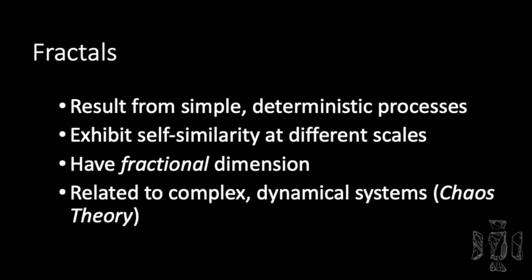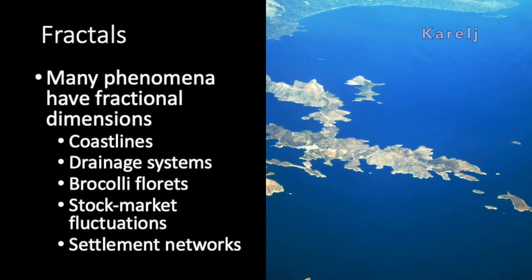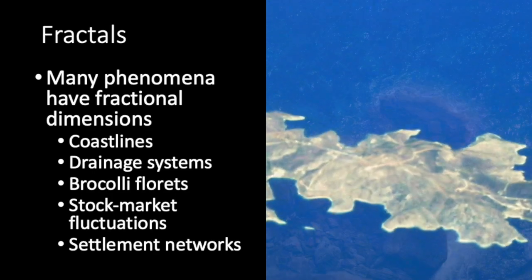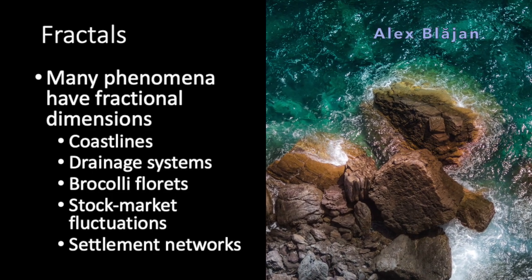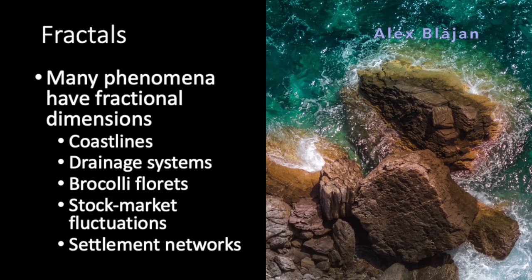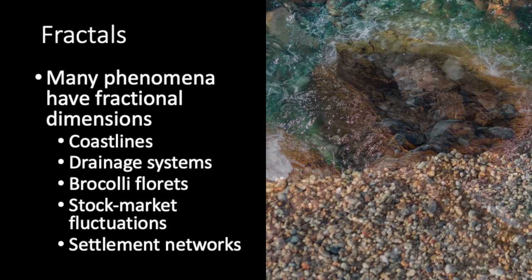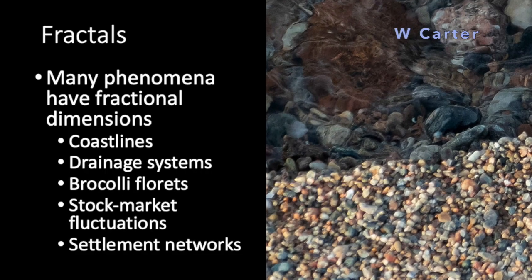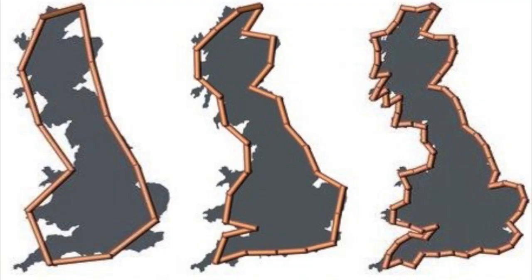Lots of things in both nature and culture have fractal properties. For example, a jagged coastline has infinite length and appears very similar in shape as we change the scale, right down to the point where the water touches the edges of pebbles and grains of sand on the edge of the beach. If we try to measure the length of a coastline, such as the length of the main British Isles seen here, the result depends on the precision of the instrument we use.